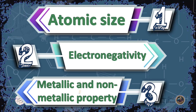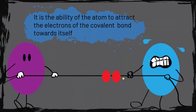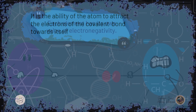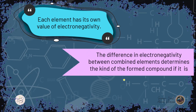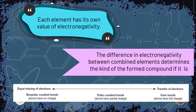The second property is electronegativity. Electronegativity is the ability of an atom to attract the shared electrons of a covalent bond toward itself. Each element has its own value of electronegativity. The difference in electronegativity between combined elements determines the kind of bond formed: if both elements have the same electronegativity, a non-polar covalent bond forms; if there is a slight difference, a polar compound forms; and if the difference is very high, an ionic bond forms.